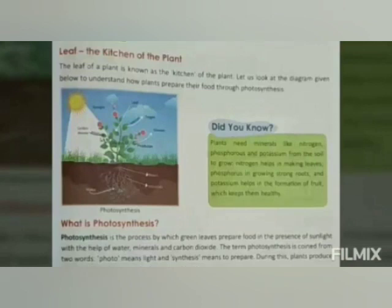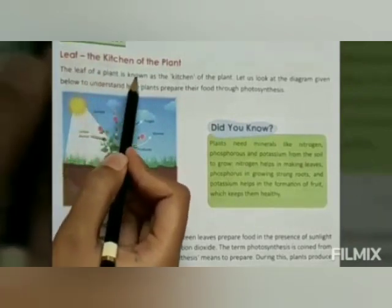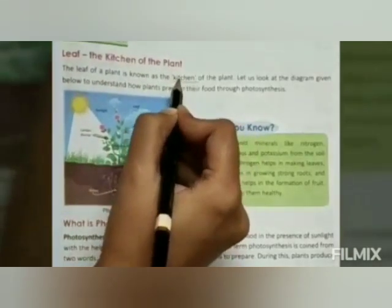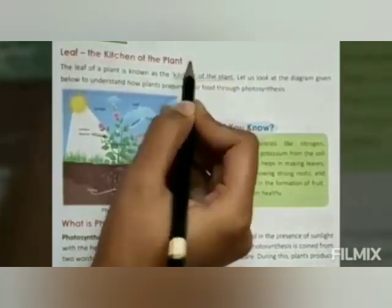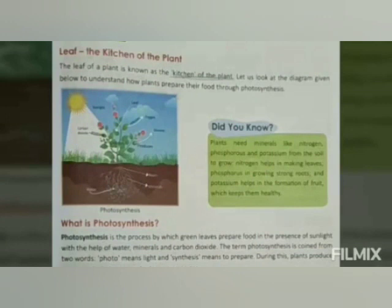For a plant, the food is prepared in the leaf itself. That is why the leaf of a plant is known as the kitchen of the plant. In a way, leaves are like the kitchen of the plant. The process of food production takes place only in the leaves of a plant.